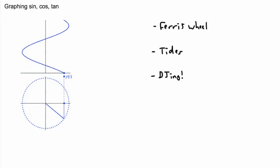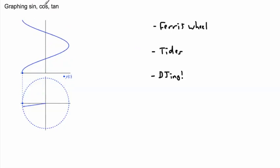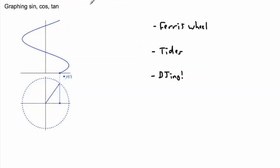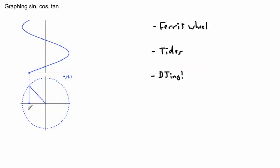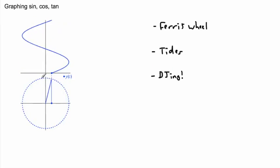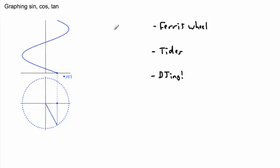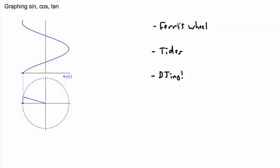It's important in trigonometry to be able to actually graph sine theta, cosine theta, and tan theta. These functions are called circular functions, and I want to explain why it is that with these circles we get these seemingly weird graphs. This is one way you can see this thing mapping along — we can even see it through a ferris wheel.